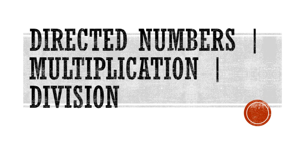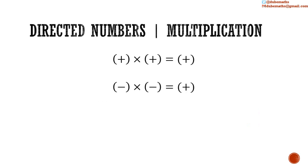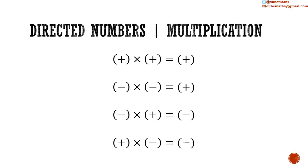Directed Numbers: Multiplication and Division. The rules of multiplication of directed numbers: a positive number multiplied by a positive number gives a positive number. A negative number multiplied by a negative number gives a positive number. A negative number multiplied by a positive number gives a negative number. And a positive number multiplied by a negative number gives a negative number.